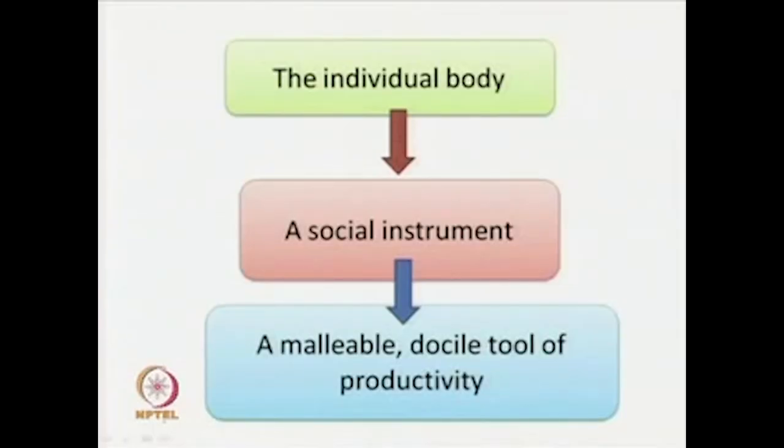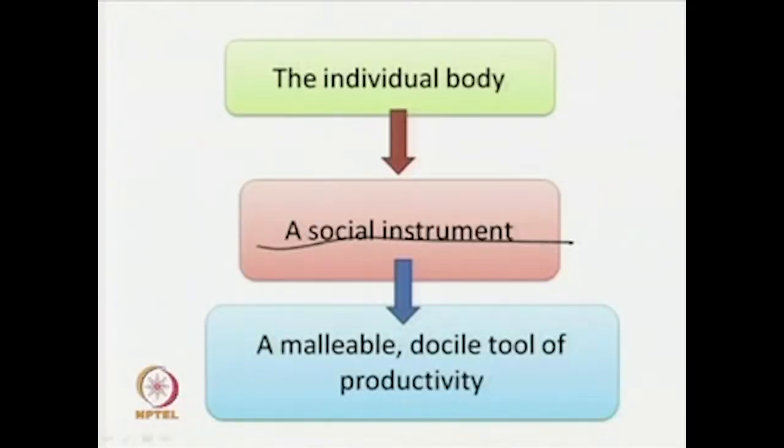Foucault says that the individual body is just an illusion — we think our bodies are ours over which we have full control. He says on the other hand that the individual body does not belong completely to an individual; it is a social instrument, and it is malleable, changeable, manipulable — and most importantly, docile. This is an important word with Foucault: a docile tool of productivity. The idea that we possess the body is an illusion; within this theorizing, the body is very much a social affair, a social entity.